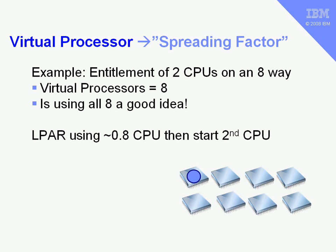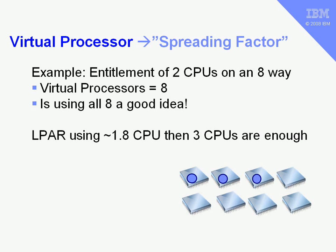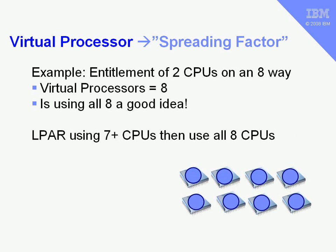If our workload builds up and we need half a CPU worth of power, one CPU is enough to run that efficiently. If it builds up to 0.8, the hypervisor says this logical partition is getting busier and perhaps needs a second CPU, so it will schedule the logical partition over two CPUs. Then if it continues to build up and gets to 80% on both, it will switch in a third processor. And so forth — it will actually build up, and when we really need seven CPUs or more, it will allocate all eight CPUs. It's doing this for efficiency reasons — there's no point running lots of CPUs if we don't actually need them.